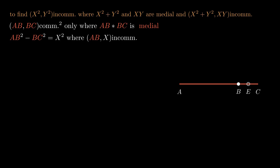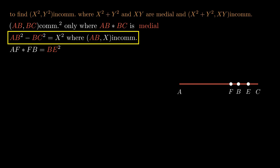Bisect bc at e and mark f so that af times fb is equal to be squared. These two conditions — ab squared minus bc squared equaling x squared, and af times fb equaling be squared — mean that af and fb are incommensurable by Proposition 10.18.